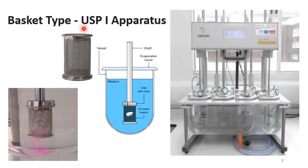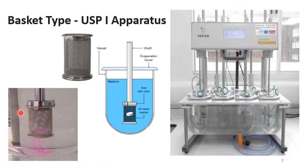USP 1 apparatus has the basket which contains the formulation — that may be tablet, capsule, granules or pellets. Generally a 40-mesh basket is used. It rotates on a shaft in the dissolution medium. Here you can see the actual picture — the tablet is placed in the basket and dissolution is running.